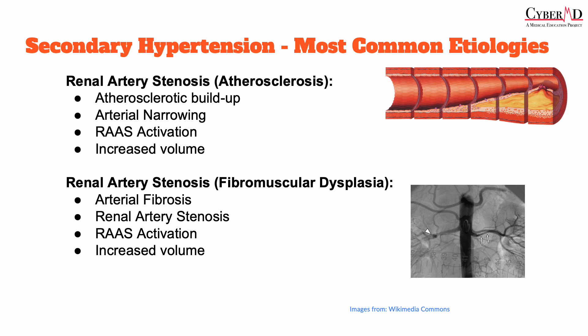All of this is in contrast to primary hypertension, where there is no identifiable cause, and neither increased plasma renin nor unilateral atrophy will be seen. So that's when you have atherosclerosis — you have this plaque buildup.